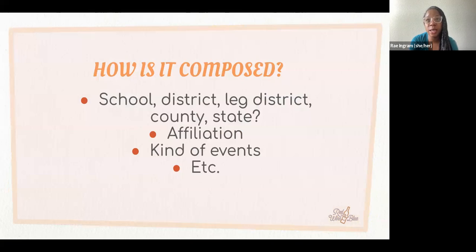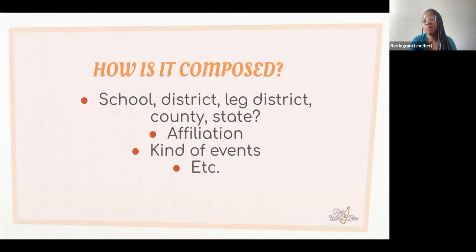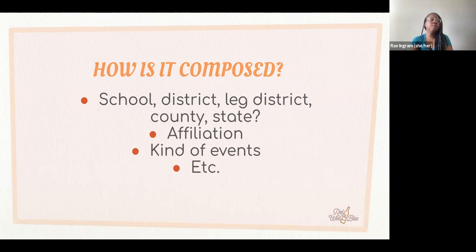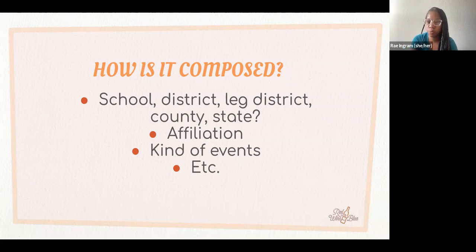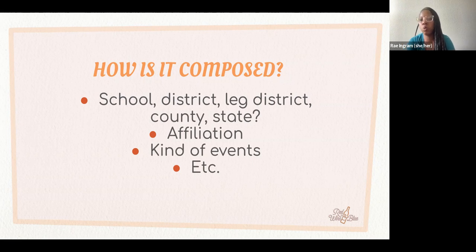Think about who is around you, because there may be people you want to get involved in Red Wine and Blue who aren't in your state. Think strategically about who's on the school board, city council, in your legislative district, county, or state, and what organizations they're affiliated with. I used to be involved with a millennial PAC in Chicago, and I'd think about who I knew in organizations like the Cook County Dems or an LGBTQ PAC — people I could go present to. Think also about whether you want to invite someone to a Vino to Vote party, have them host one, or whether you'd rather meet them at the farmers market somewhere in the community.